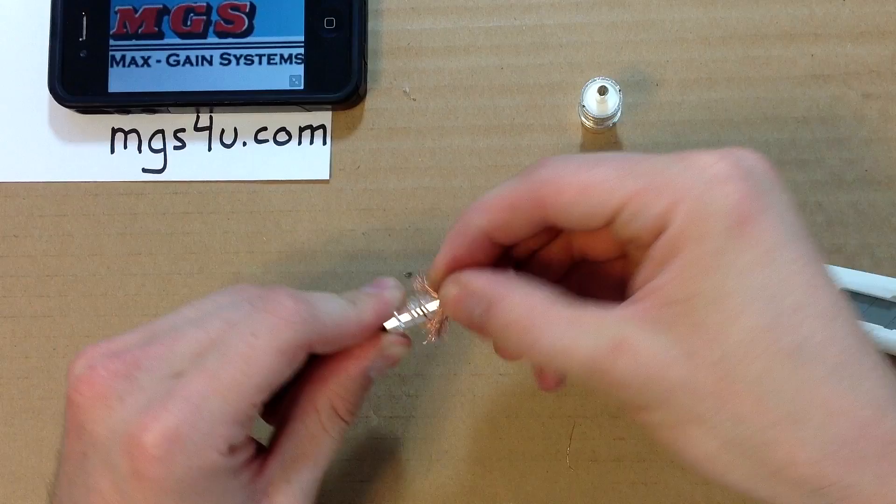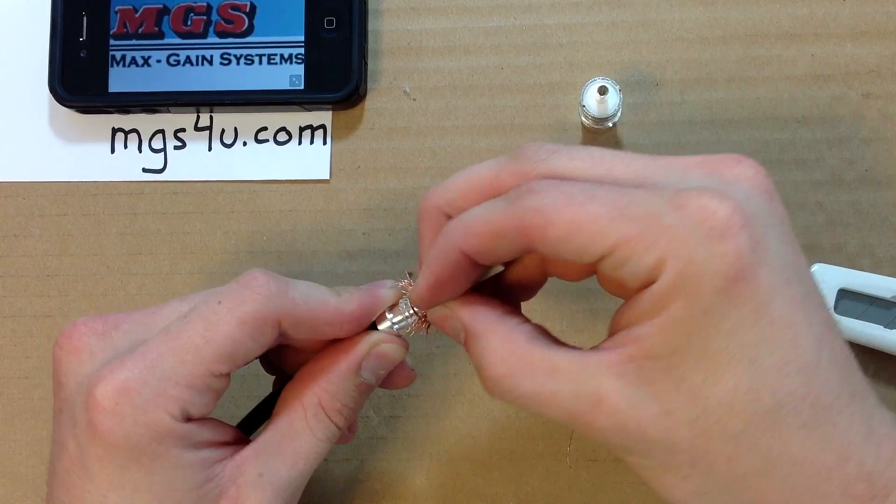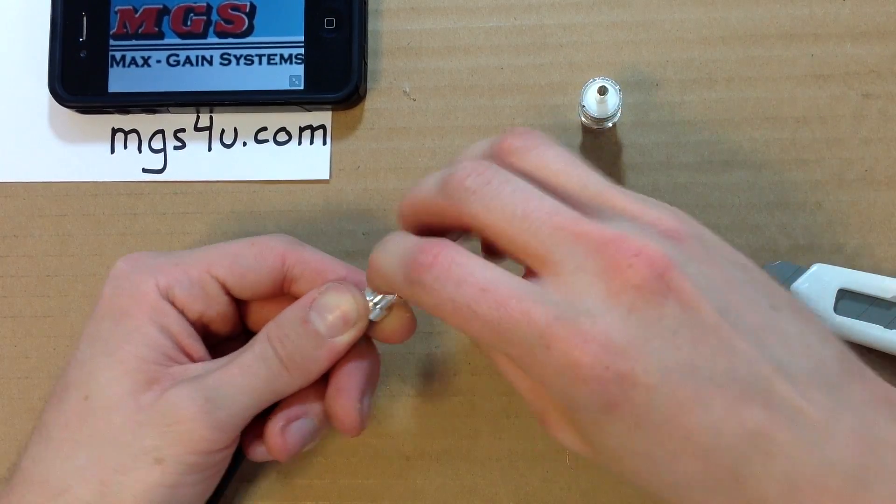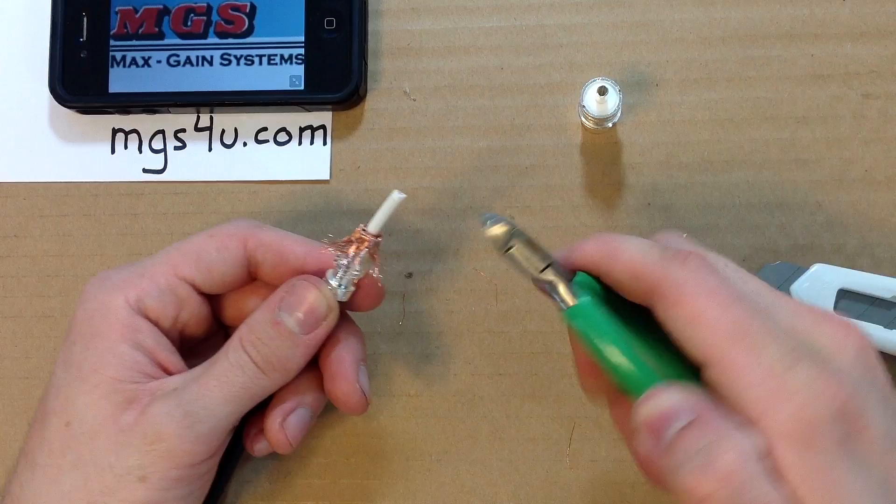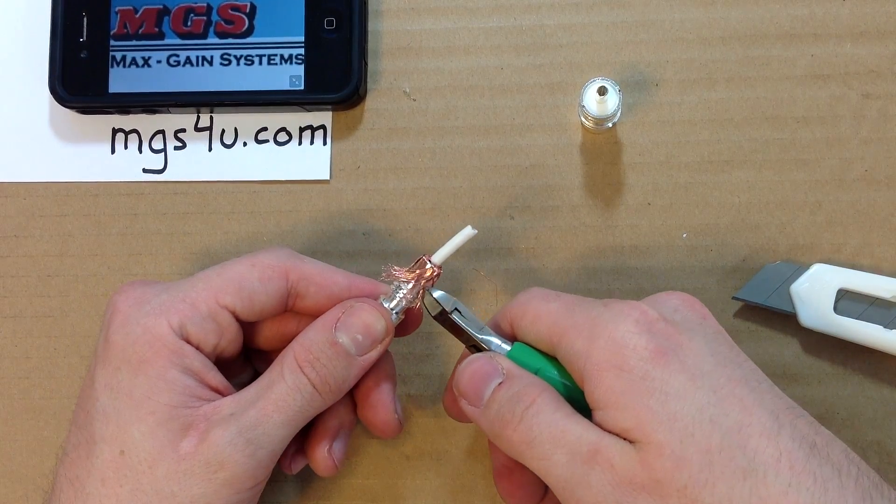Fold the separated strands of braid back onto the reducer. Next, grab your diagonal cutters and trim the strands of the braid back just above the threads of the reducer. This allows easy installation of the PL259 main body.